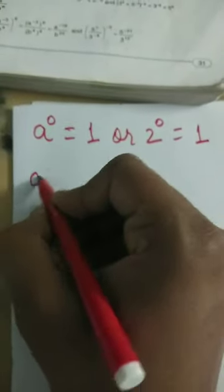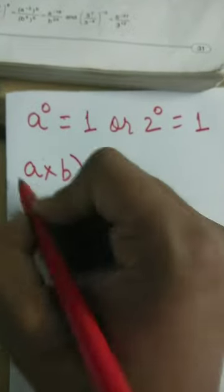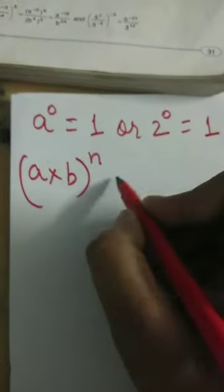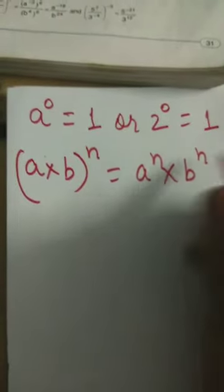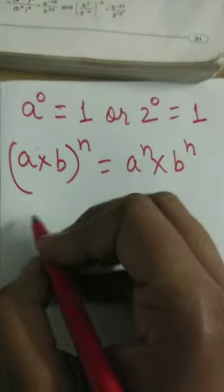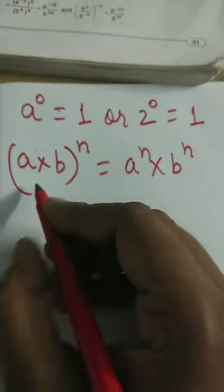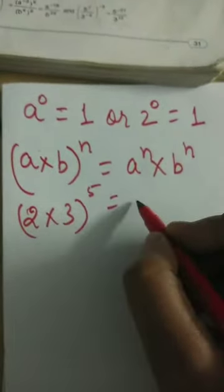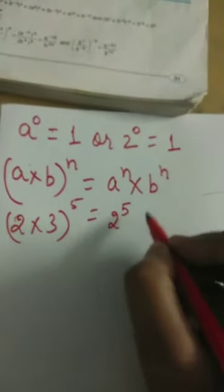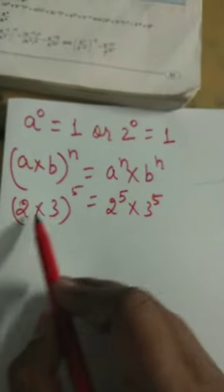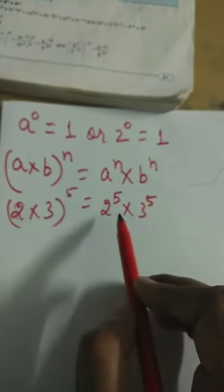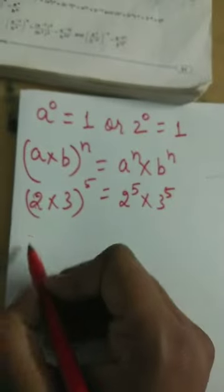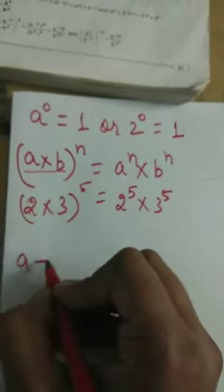Another fact about exponents: if two different numbers a and b are each raised to the same power n, then (a × b) power n equals a power n into b power n. For example, (2 × 3) power 5 equals 2 power 5 into 3 power 5. Remember, this rule applies only for multiplication, not for addition.